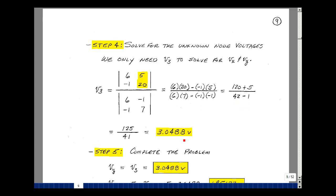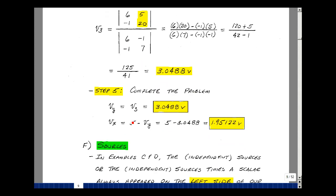Step 5 is to complete the problem. So V sub Y is V3. It's equal to 3.0488 volts. V sub X is V1 minus V sub Y, but we knew that V1 was 5 volts. And V sub Y we just solved for. And the difference is 1.95122. I want the answer in engineering notation with the appropriate unit.